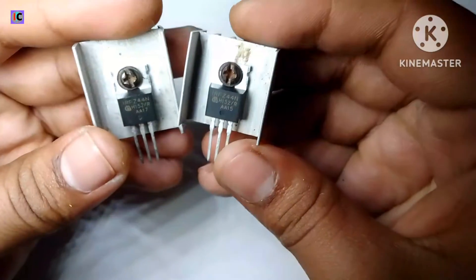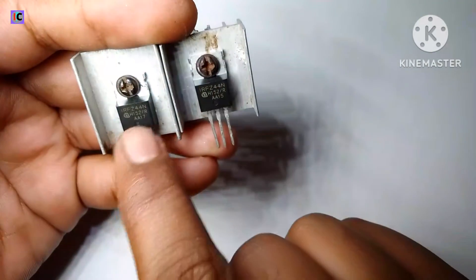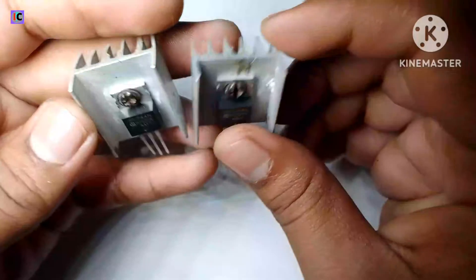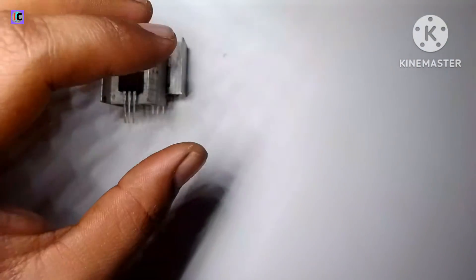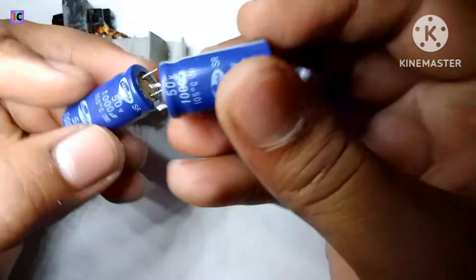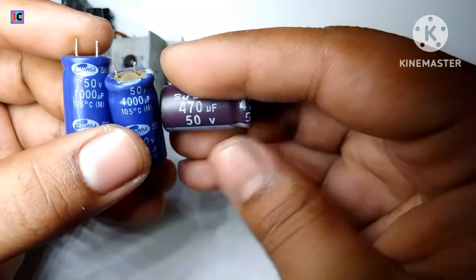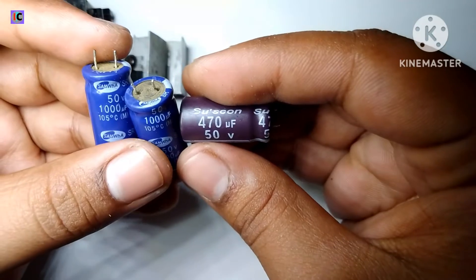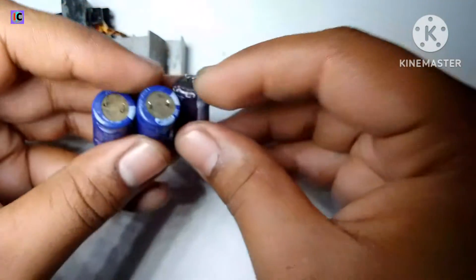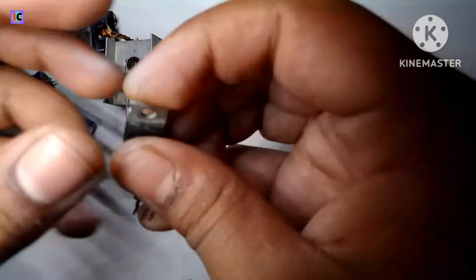Here we can see the components we need for the switching of the transformer. We are using IRF-Z44 N-channel MOSFET. After this, we are using 50 volt 1000 microfarad capacitor. This will create the output. For the input, I am using a 50 volt 470 microfarad capacitor.